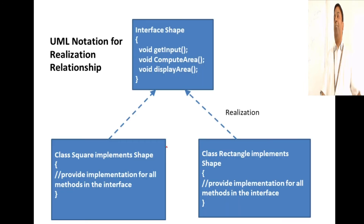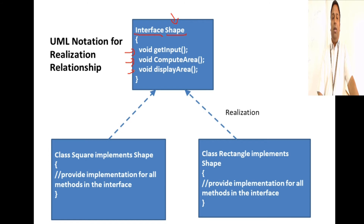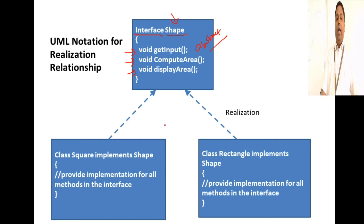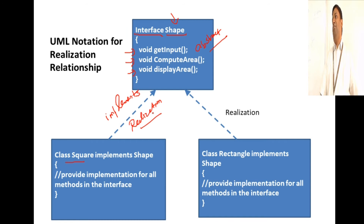Let's take a look at the UML notation for interfaces. You define an interface in Java using the keyword 'interface' followed by the interface name. Here, Shape is an interface and all the methods are abstract — there is no definition for any of the methods. The class Square implements this interface using the 'implements' keyword. In UML, this is called realization — not generalization. The notation is a dotted arrow pointing to the interface.